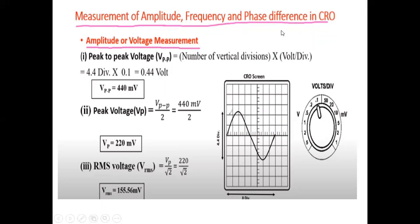Suppose there is a CRO screen with a sine wave. This is your volts per division knob showing volts and millivolts. The number of vertical divisions is 2.2 in the upward direction and 2.2 in the downward direction, giving 4.4 divisions total. With a volts per division setting of 0.1 volt, the peak-to-peak voltage is 4.4 × 0.1 = 0.44 volt, that is 440 millivolt.